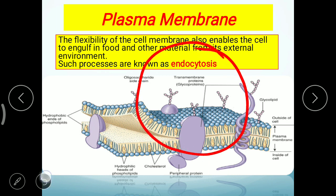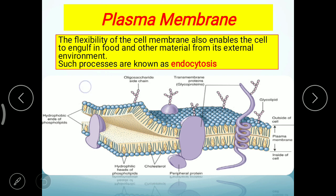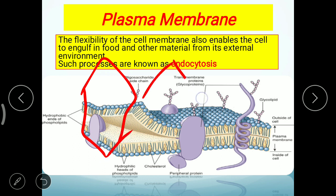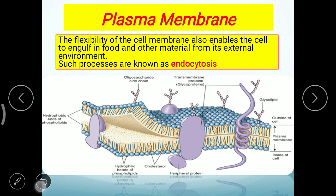Plasma membrane living cells को shape provide करती है और उनके contact में भी मदद करती है। अगला function है excretion — जब cell कुछ खाएगी तो कुछ excrete भी करेगी। Proteins lysosomes के द्वारा digest होते हैं, food material से nitrogenous waste produce होते हैं जिन्हें बाहर करना ज़रूरी है नहीं तो cell का function खराब हो जाएगा — उनको बाहर करने के लिए plasma membrane help करती है।